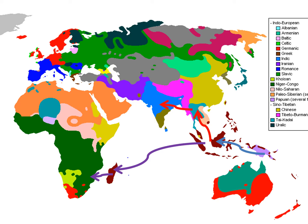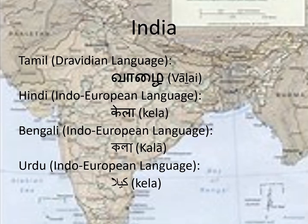Our next stop on our way to Africa is India. Just like Southeast Asia, there are multiple language families in India. India is a very linguistically complex country with over 1,500 languages spoken, but we'll focus on the more well-known ones. Tamil is a Dravidian language, debated to be one of the oldest living languages in the world, spoken in southern India and Sri Lanka — the word for banana is vare. Our next three contestants come from the Indo-European language family: Hindi, Bengali, and Urdu — the same family as English. The word for banana in all three is pronounced almost exactly the same, even if their writing systems differ.